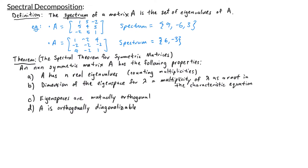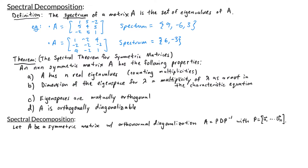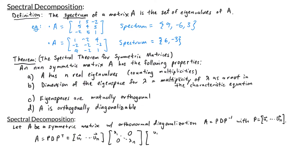Now let's talk about spectral decomposition. Let A be a symmetric matrix with orthonormal diagonalization A = PDP⁻¹, where P is the matrix with columns U₁ through Uₙ. We can write A = PDP^T because when P has orthonormal columns, its inverse is P transpose. D is the diagonal matrix with eigenvalues λ₁ through λₙ, and P^T has rows U₁^T through Uₙ^T.